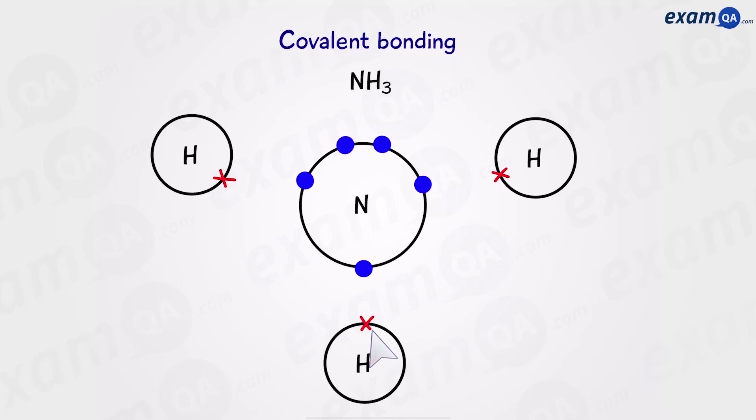Okay, so how many will they share? Now, hydrogen's electron is in the first shell. And remember, the first shell is the smallest. It can only hold a maximum of two electrons, meaning that hydrogen already has one electron. So it needs one more to have two and have a full outer shell. So it has to share one. Nitrogen, on the other hand, has five. It needs three more to have eight. So it has to share three.